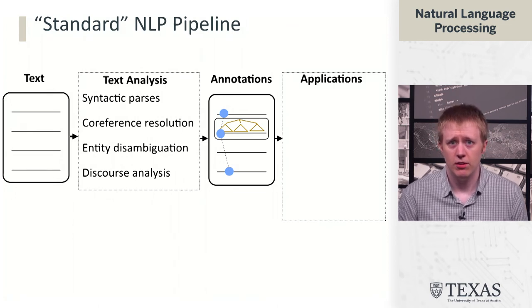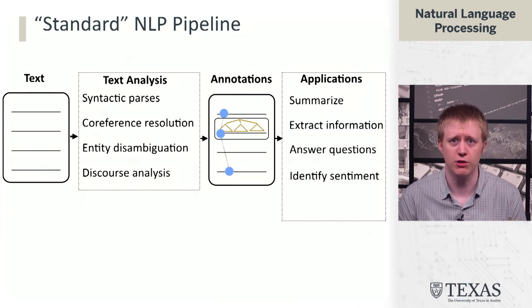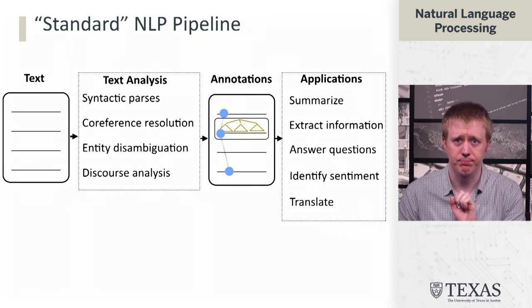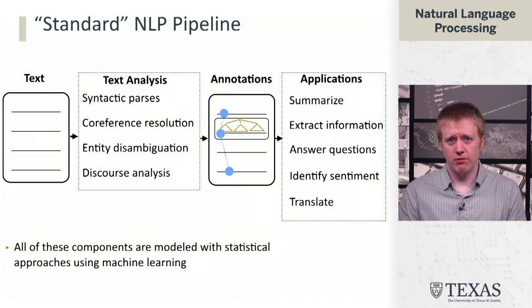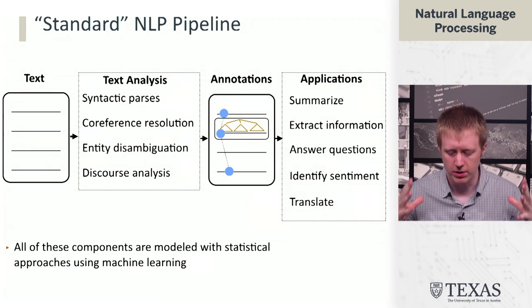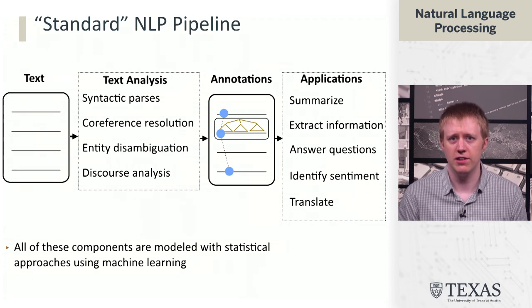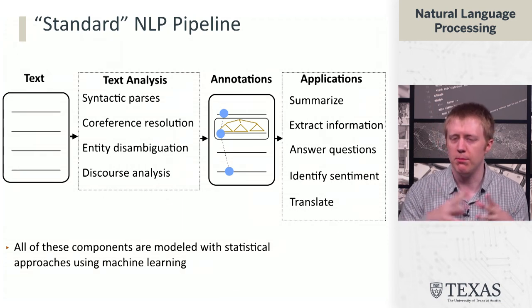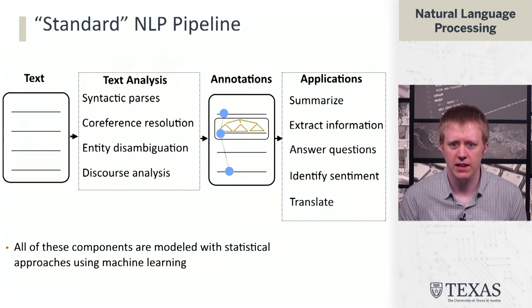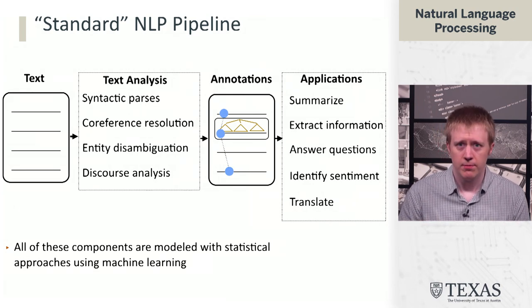And that's going to enable us to do all these cool applications, like summarize things, extract information, answer questions, identify sentiment, translate the text into another language. Throughout this course, we're going to tackle all of these problems under the broad umbrella of statistical approaches using machine learning. All of these things require dealing with complex open domain text, and the only way we know to reliably do that is to learn models from large-scale data.